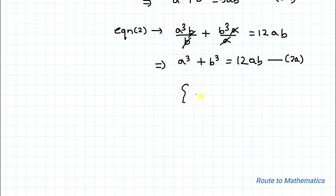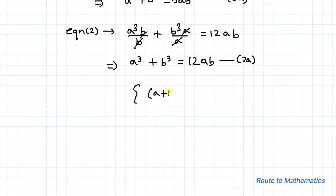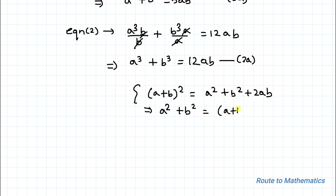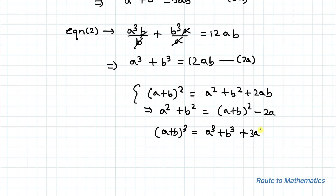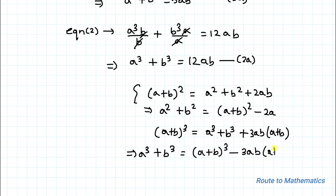Now we know the algebraic identity (a + b)² = a² + b² + 2ab, so we can write a² + b² = (a + b)² − 2ab. Similarly, (a + b)³ = a³ + b³ + 3ab(a + b), so we can write a³ + b³ = (a + b)³ − 3ab(a + b).